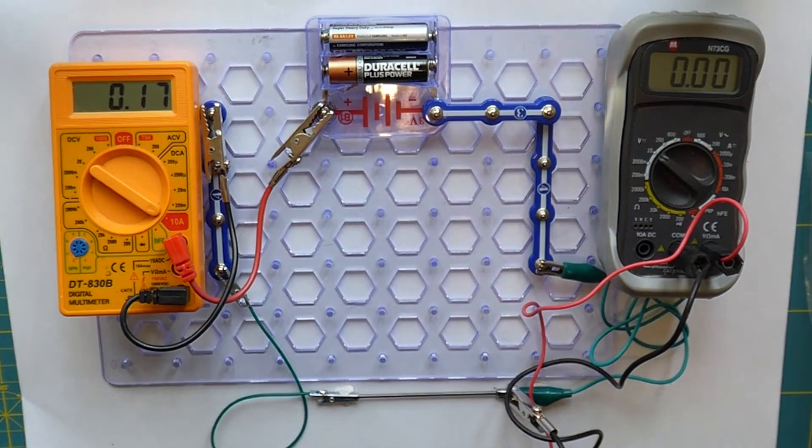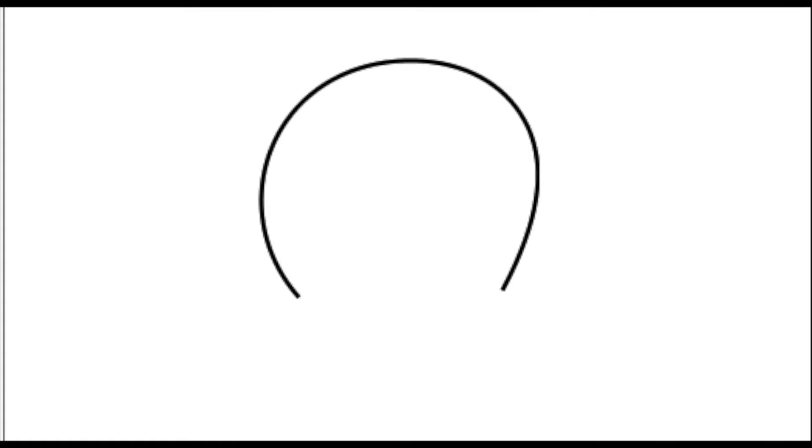Now suppose we took that piece of graphite and wax, the pencil lead, and gradually bent it into a horseshoe shape like this.